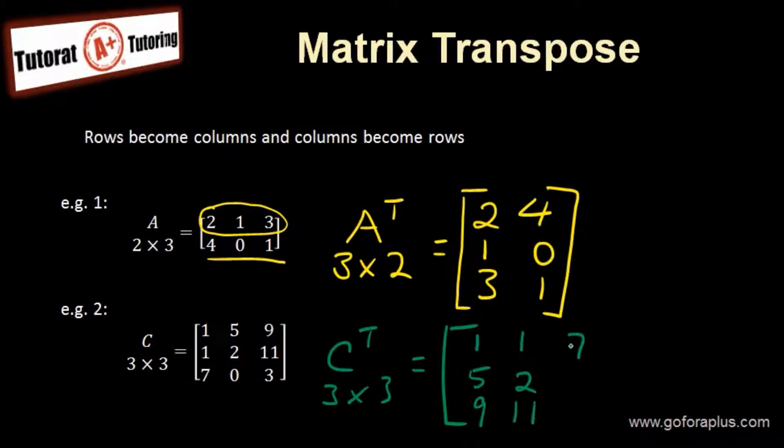The third row—seven, zero, three—becomes the last column. So this is matrix C transpose.